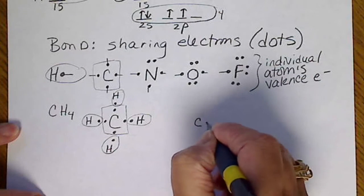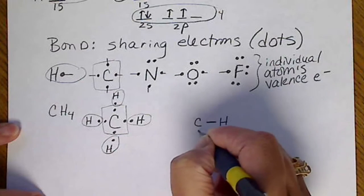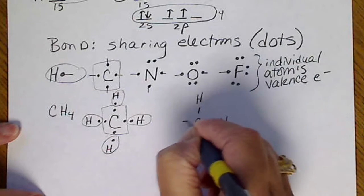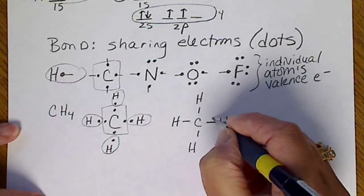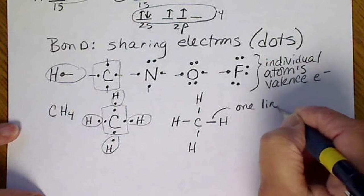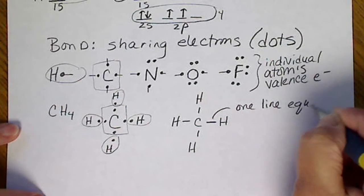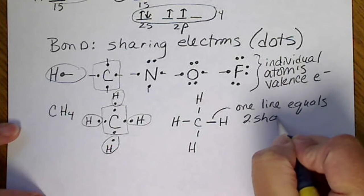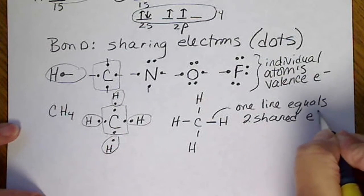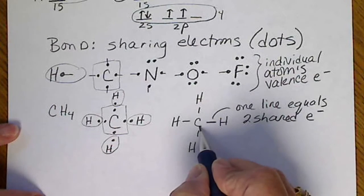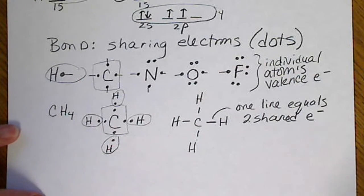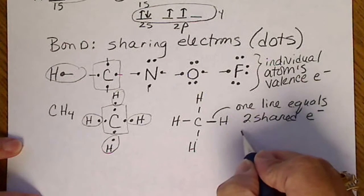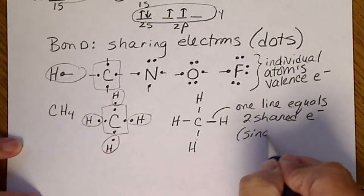Generally, we're going to write shared electrons as a line connecting the two atoms. So one line equals two shared electrons. Shared meaning one electron comes from one atom and the other electron comes from another. So one line, two shared electrons, we're going to call that a single bond.